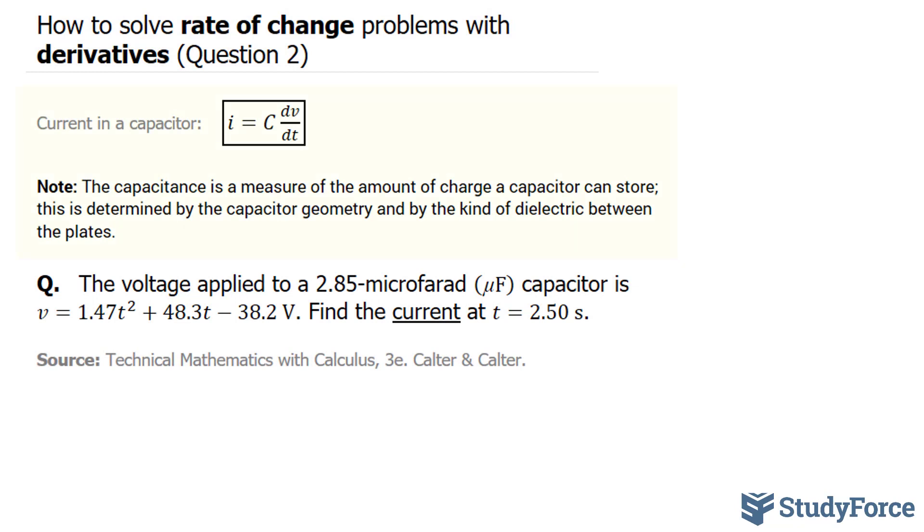To do this question, we'll need the following formula: the current in a capacitor, represented as I, is equal to the capacitance times the rate of change of voltage with respect to time, represented by dV/dt.